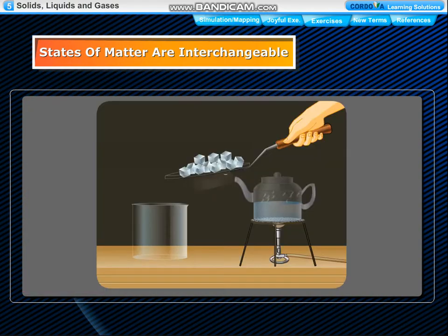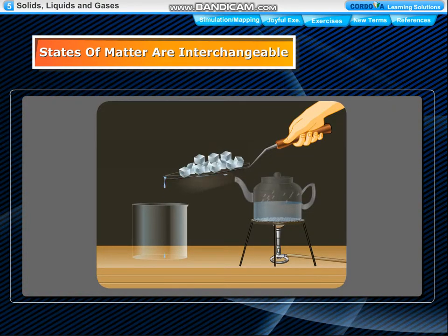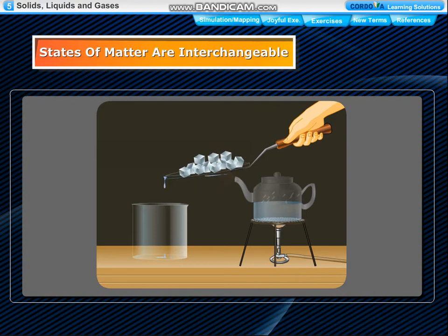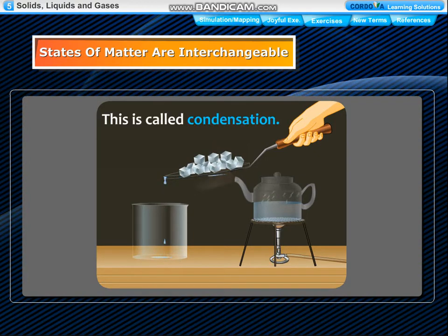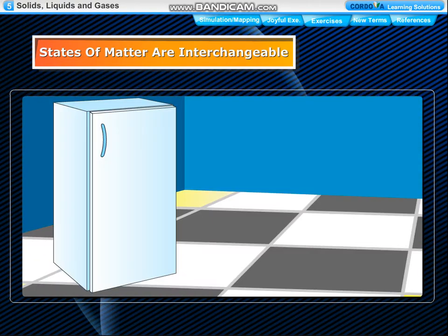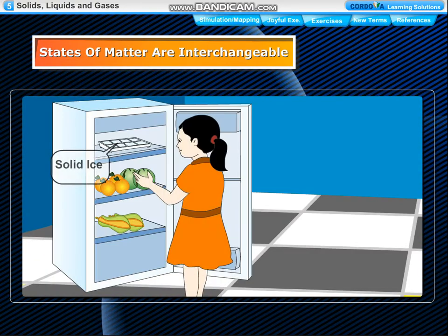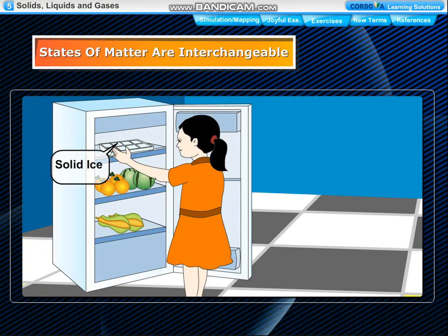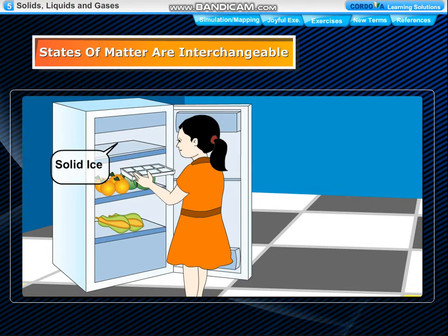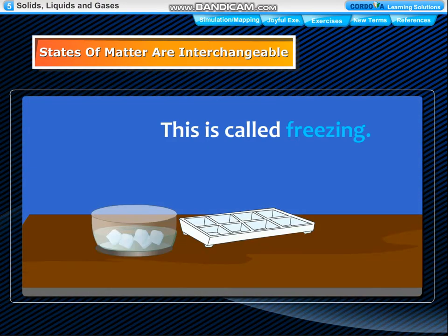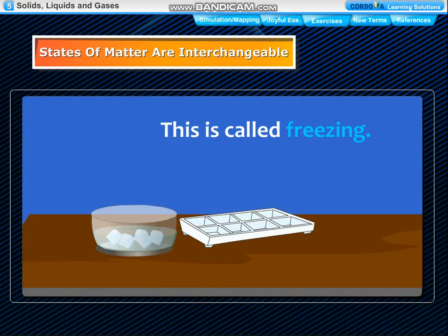On cooling, steam (gas) changes into water (liquid) — this is called condensation. On cooling, water (liquid) changes into ice (solid) — this is called freezing.